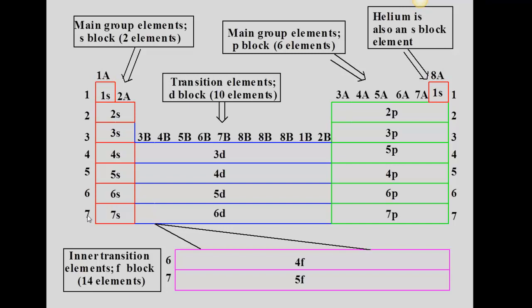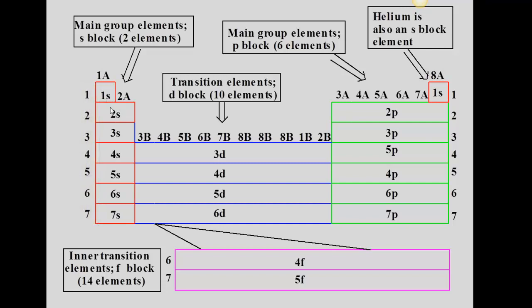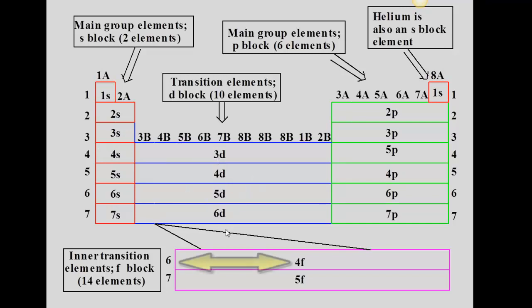Notice how the period number, 1 through 7, corresponds to the principal quantum number: 1s, 2s, 3s, 4s, 5s, 6s, 7s, and 2p down to 7p. But it's slightly offset for the d and also for the f. If an element is in the d region in the fourth period, the d orbital associated with that element is 3d, not 4d. So the d's are offset by 1. For the f's, offset by 2 — if we're talking about an element in the sixth period, think about 4f, not 6f.